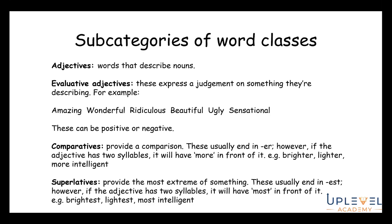Comparatives provide a comparison and usually end in -er. However, if the adjective has two or more syllables, it uses 'more' in front — so bright becomes brighter, light becomes lighter, but intelligent becomes more intelligent. You can use a clapping test to count syllables if you're unsure. Superlatives provide the most extreme degree and usually end in -est, or use 'most' for longer adjectives — for example brightest, lightest, most intelligent. You can't go beyond a superlative — it's the highest form of degree.